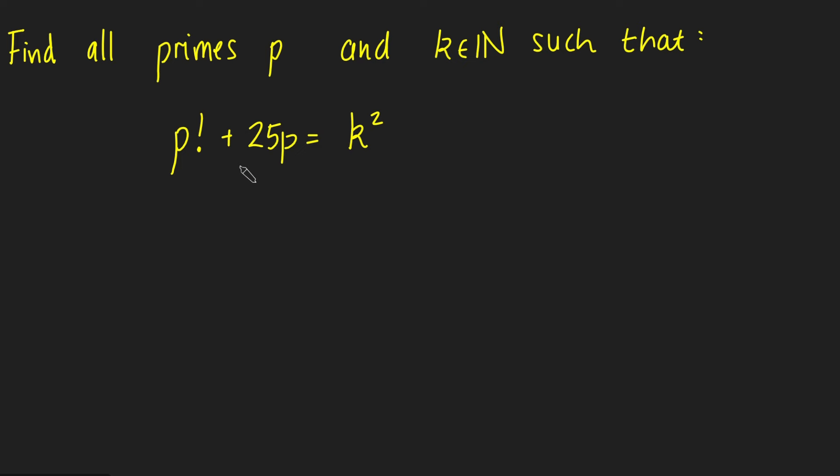So that means that k squared must be a multiple of p, but since p is prime, that must mean that k is a multiple of p. So I can write it as m times p, where m is just some positive integer. And so if I sub that back in, I get p factorial plus 25p equals m squared p squared.